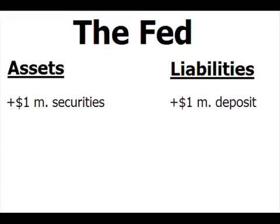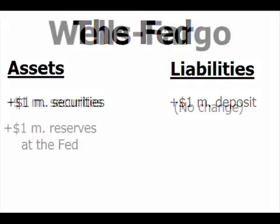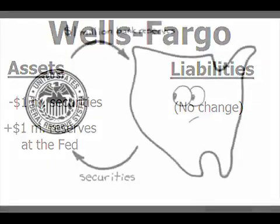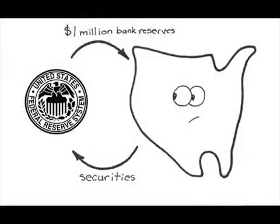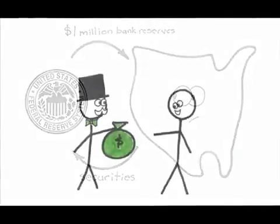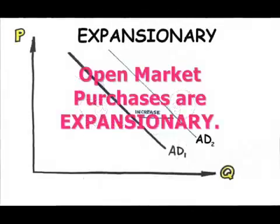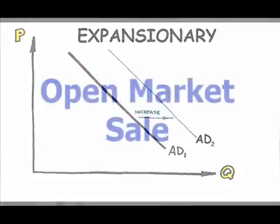Wells Fargo also sees a change in its asset mix, with $1 million less in government securities but $1 million more on deposit with the Fed. The big difference is that $1 million in securities can't be loaned out, but $1 million in bank reserves — or at least some fraction of it — can be lent out. With the open market purchase, the Fed has injected $1 million into the economy, plus whatever additional effect from lending of the excess reserves, making this expansionary policy.